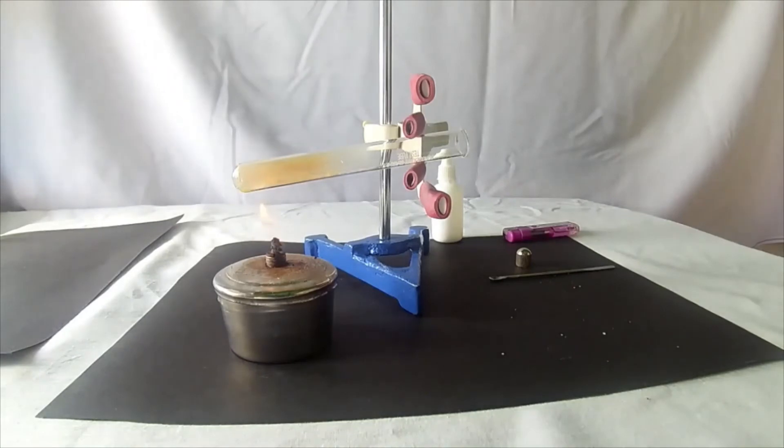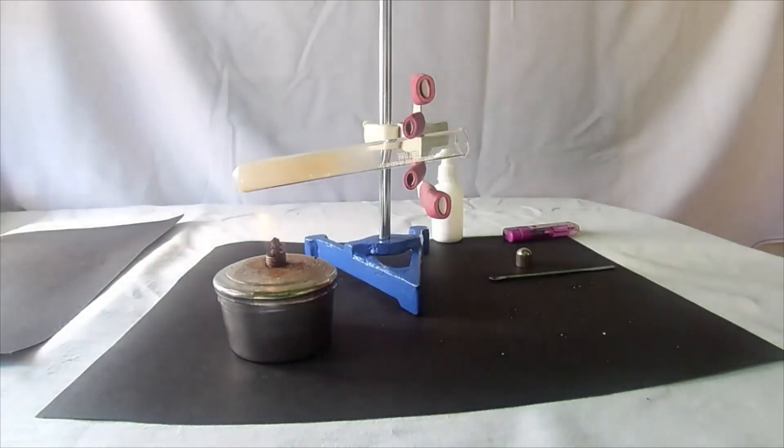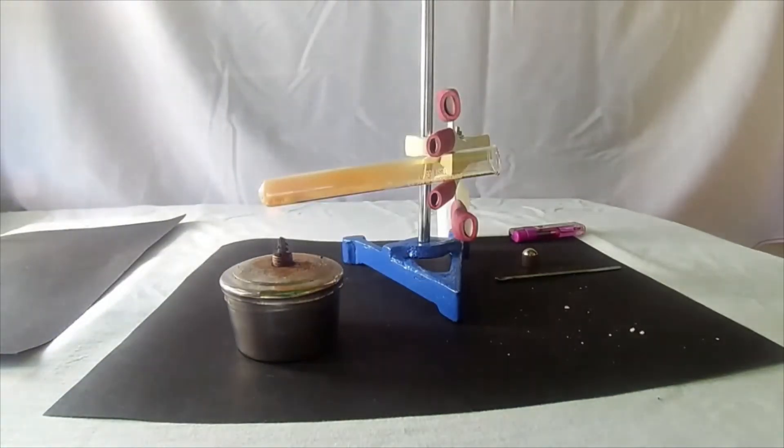Now we can see a reddish brown color gas. This is nitrogen dioxide. When lead nitrate is heated, nitrogen dioxide gas is evolved. See the reddish brown color. This is nitrogen dioxide.